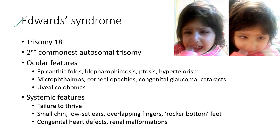Next is Edwards syndrome, occurring due to trisomy 18. It is the second most common autosomal trisomy after Down syndrome. The ocular features include epicanthic folds, blepharophimosis, ptosis, hypertelorism, microphthalmia, corneal opacities, congenital glaucoma, cataracts, and uveal colobomas. The systemic features include failure to thrive, small chin, low-set ears, overlapping fingers, rocker-bottom feet, congenital heart defects, and renal malformations.